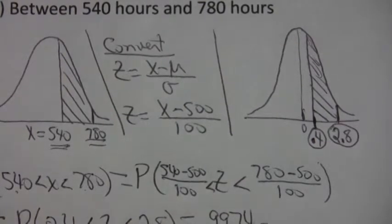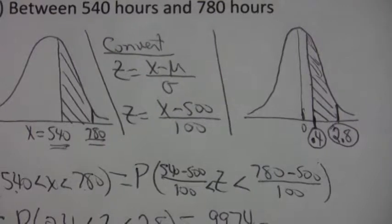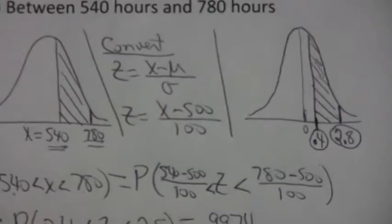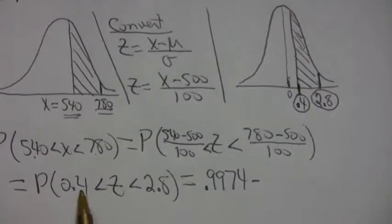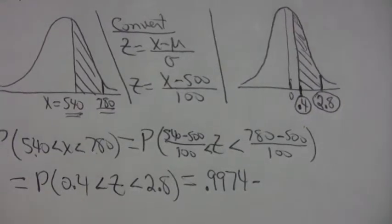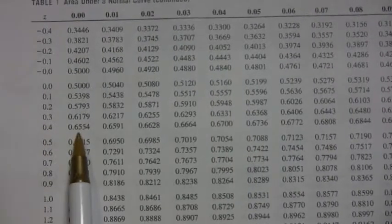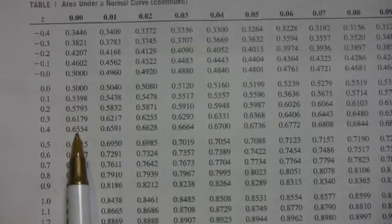And then subtract. And look up the bottom number, the left number, which is 0.4. If you look up 0.40, you get that number, which is 0.6554.